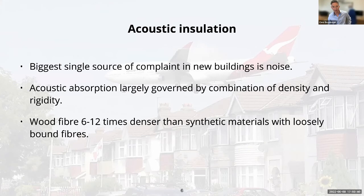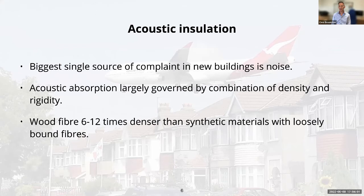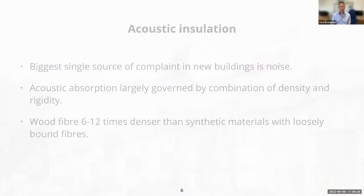Acoustic absorption is governed by a combination of density and rigidity — rigidity being a negative thing in this sense. Concrete might seem a good material for sound insulation but it's actually awful and transmits sound particularly well. A dense, fibrous, relatively soft and pliable material gives you something which absorbs a lot of sound. Wood fibre products are between 6 and 12 times denser than synthetic materials doing a similar job, and those fibres are relatively loosely bound so they don't transmit vibration at all — so it's incredibly good acoustically.